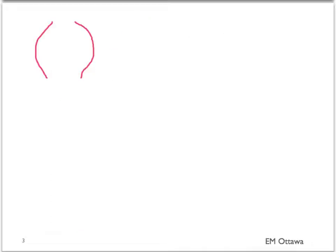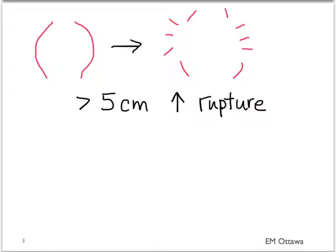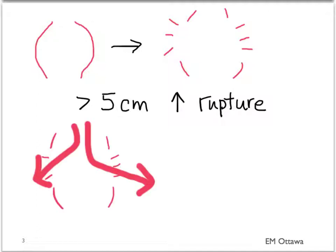As the AAA grows, it's more likely to rupture. The risk of rupture increases when the AAA is more than five centimeters in diameter. As it ruptures, the patient exsanguinates. Therefore, AAA is a must-not-miss diagnosis in the emergency department.